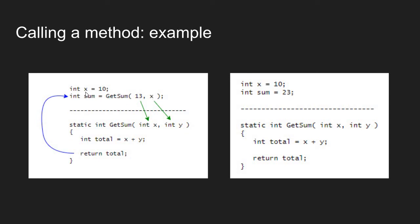Notice there is a variable int x in main and an input parameter variable int x in the getSum method. Because all methods are independent blocks of code, any variables declared inside a method only exist inside that method. The int x in main is completely different from the int x in getSum. Just because a variable has the same name in two methods does not mean the value is automatically passed — values must be passed explicitly through the method syntax.